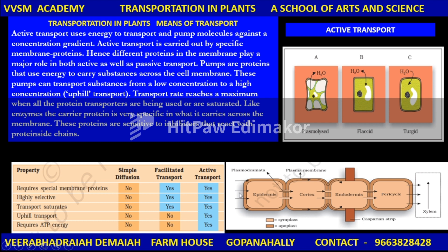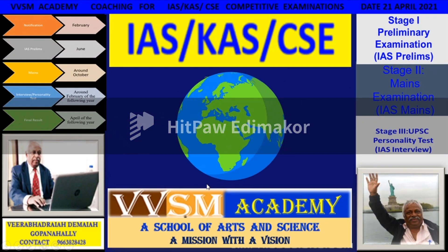Another important concept is symplast and apoplast. In the root system, the plasma membrane, epidermis — the outermost layer of the root — cortex, pericycle, and xylem tissue are all involved in transporting water through plants.